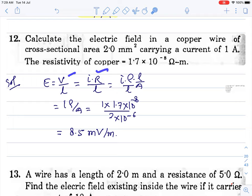V equals IR, R equals rho L by A. After putting all values, you will get E equals 8.5 mV/m.